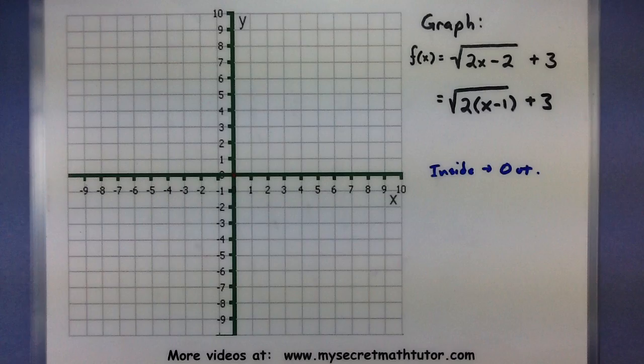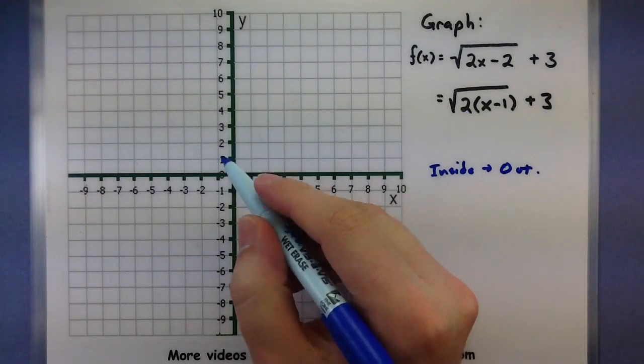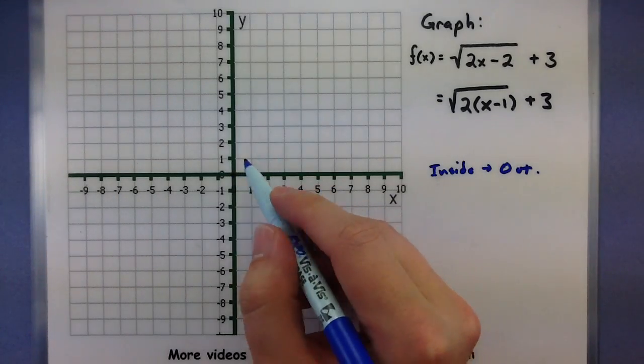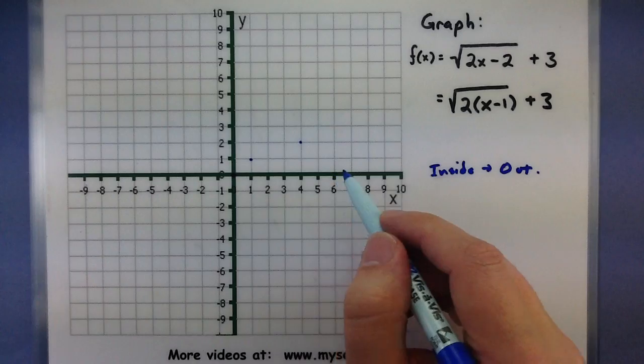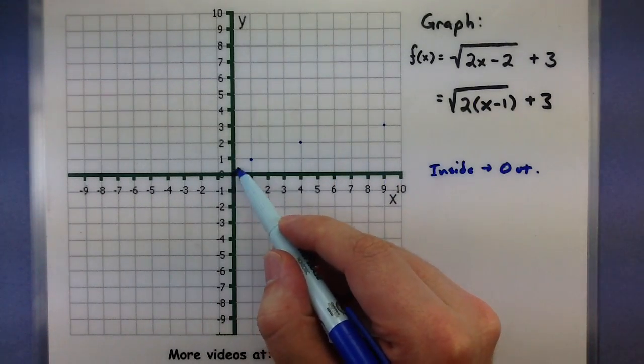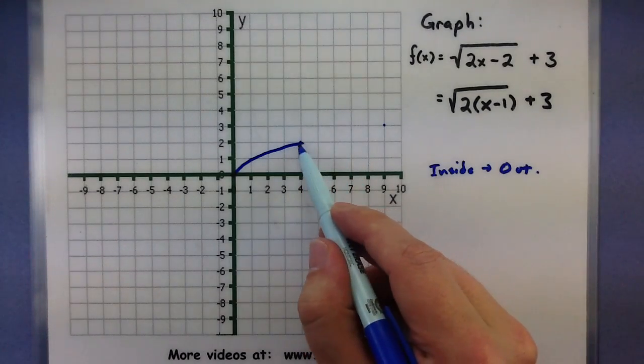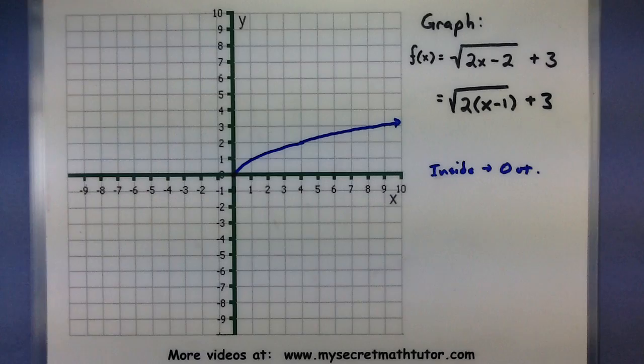So I'm first going to start with a graph of the original square root function and that's because this one deals with the square root. So square root would go through (0,0). If I take the square root of 1 I get 1. Take the square root of 4 I get 2. If I take the square root of 9 I get 3. So this would be like our original square root.